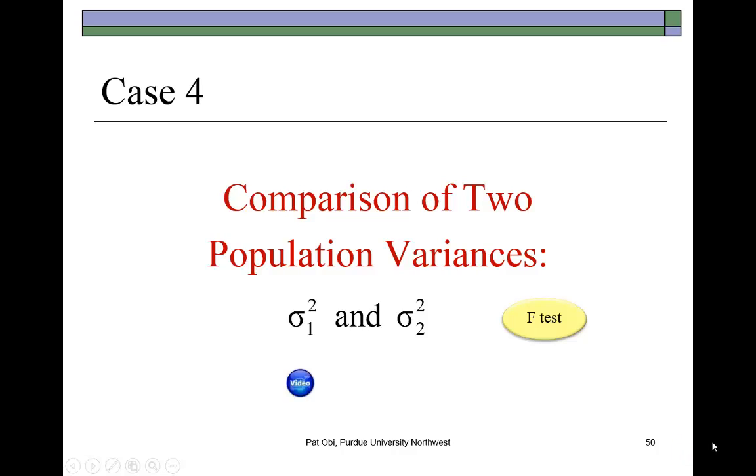In this presentation, I show how to compare the variances of two independent populations with the assumption that the populations have a normal distribution. To compare the variances, we're going to do an F-test, as I'll demonstrate shortly.